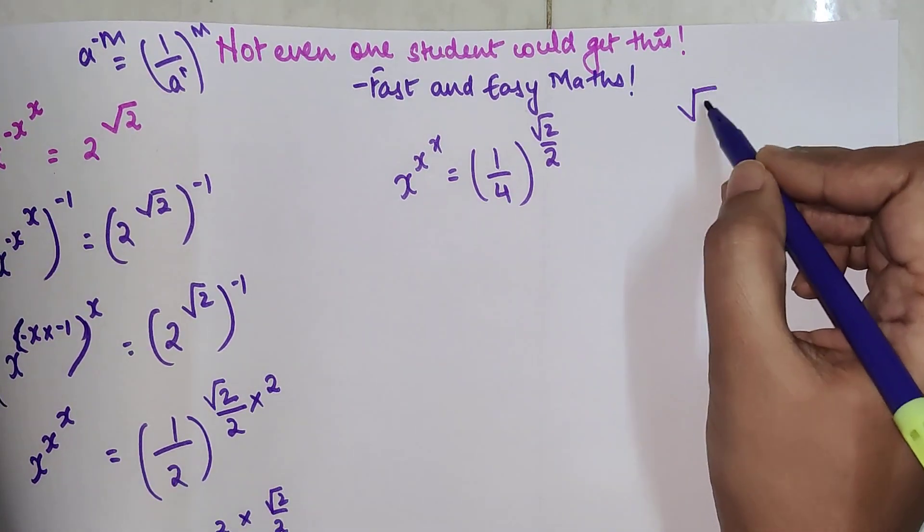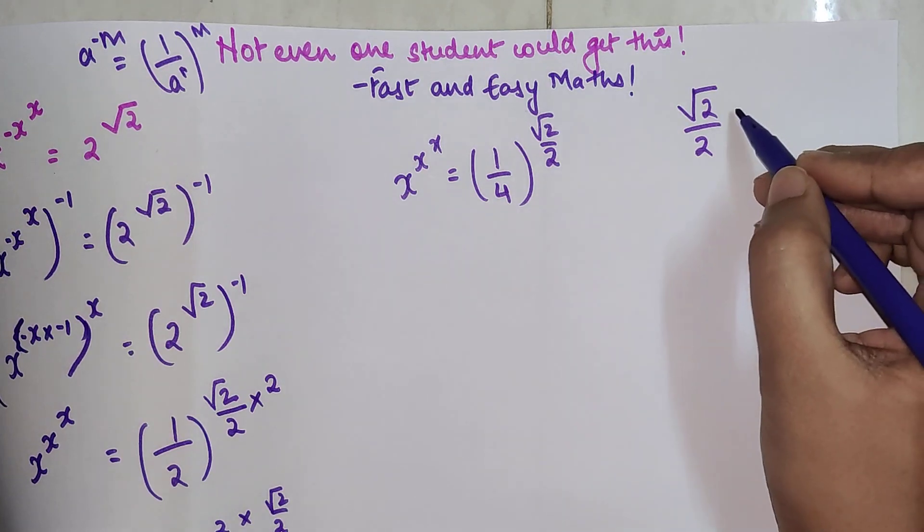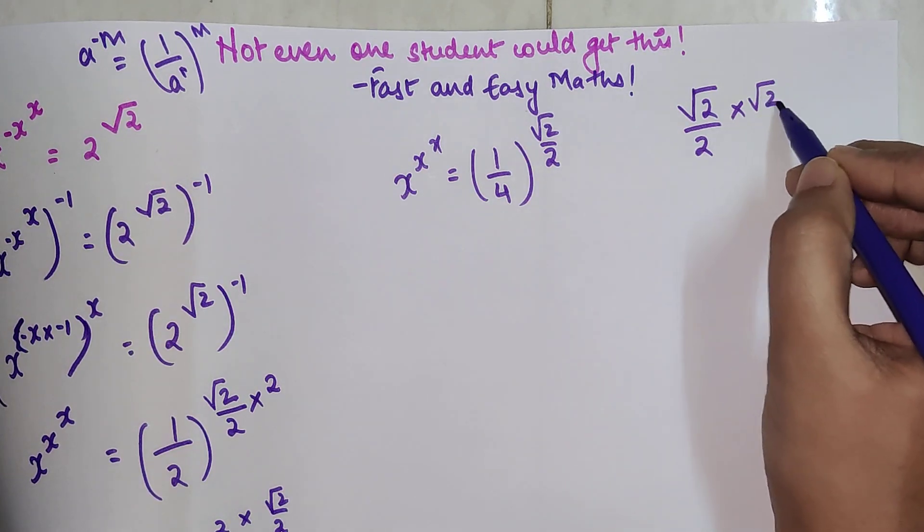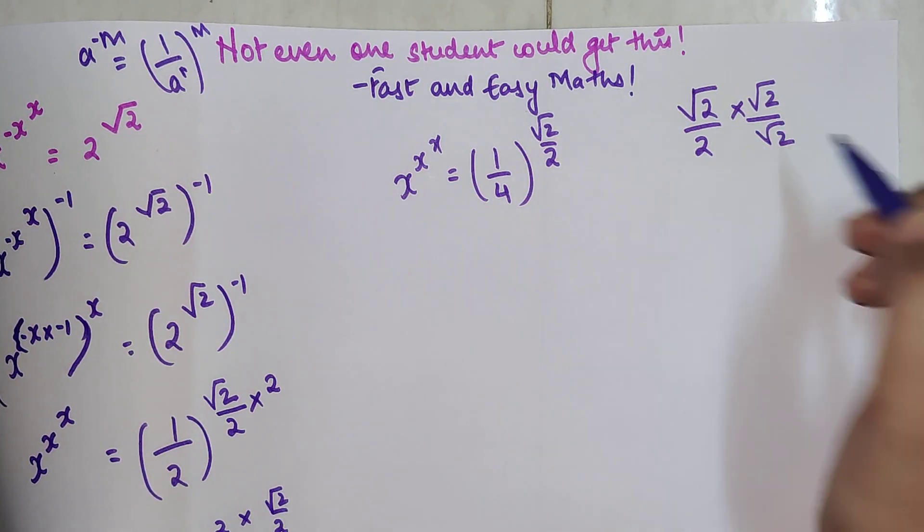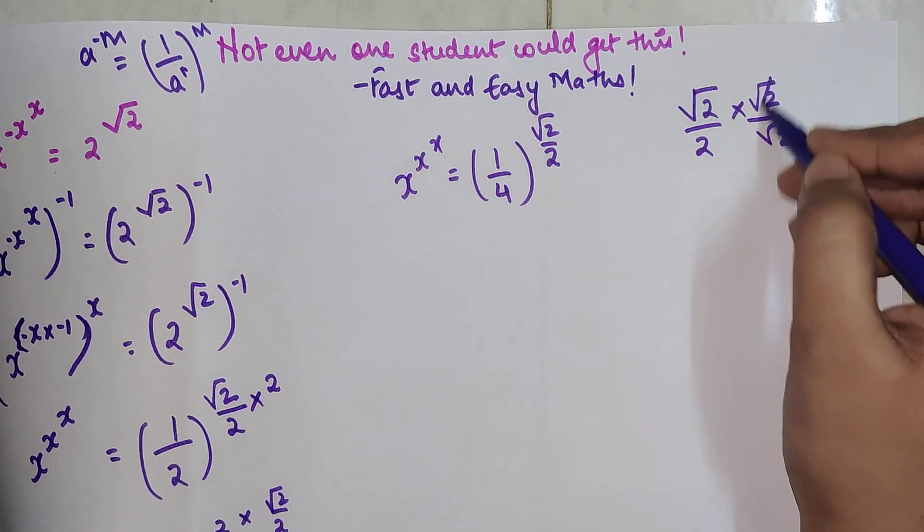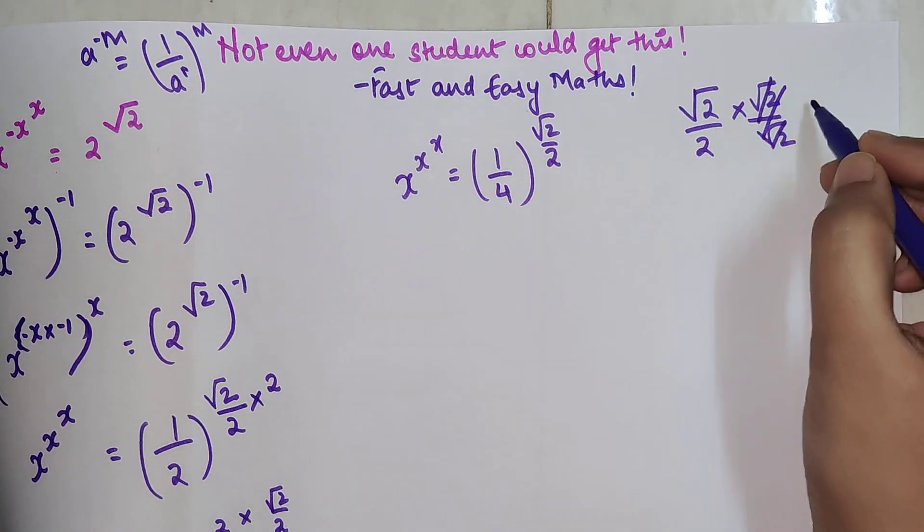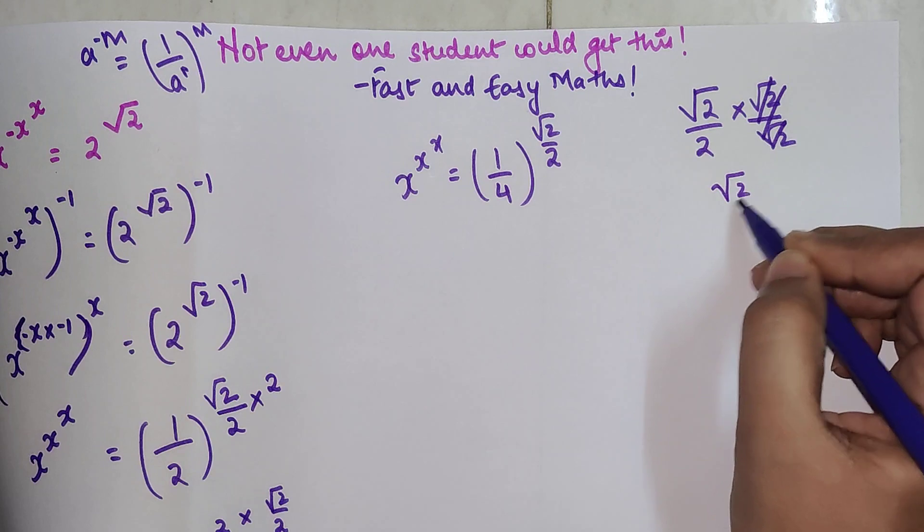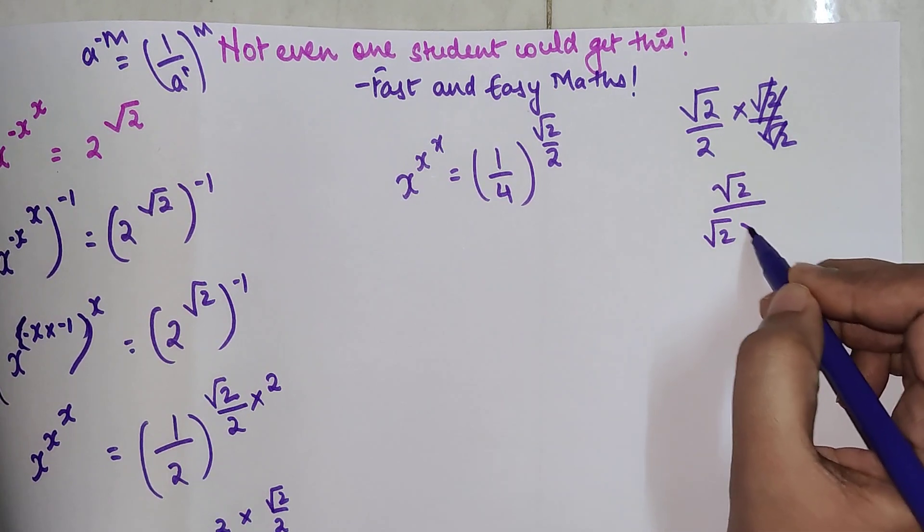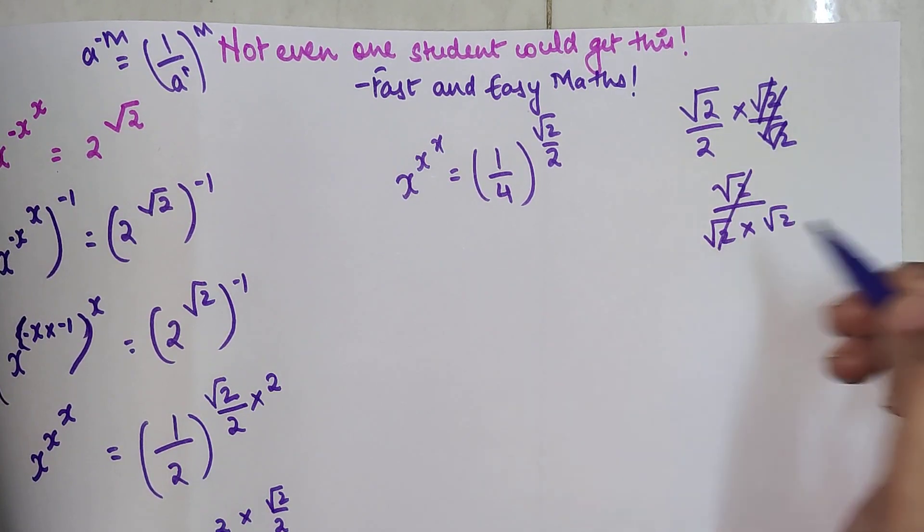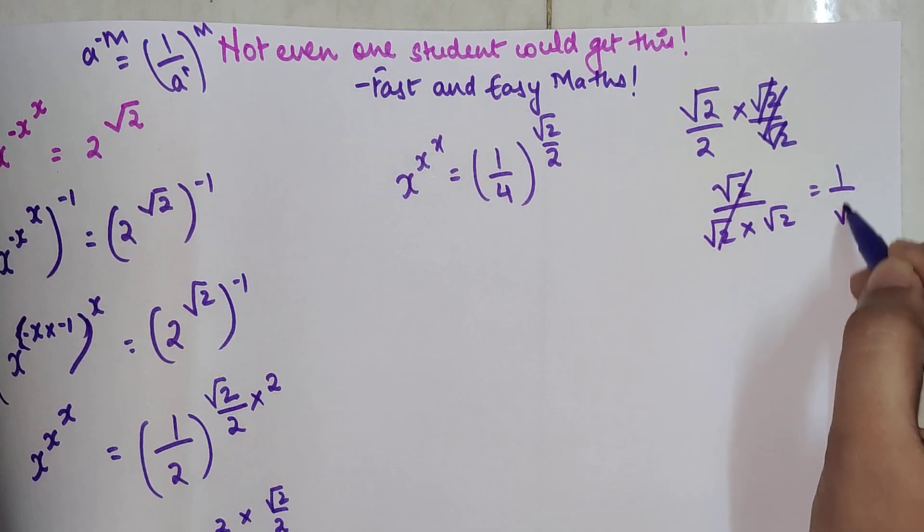When you have root 2 upon 2 and you want to get rid of the roots, we can write this as root 2, and this 2 can be written as root 2 into root 2. So this will get cancelled and I'll be left with 1 upon root 2.